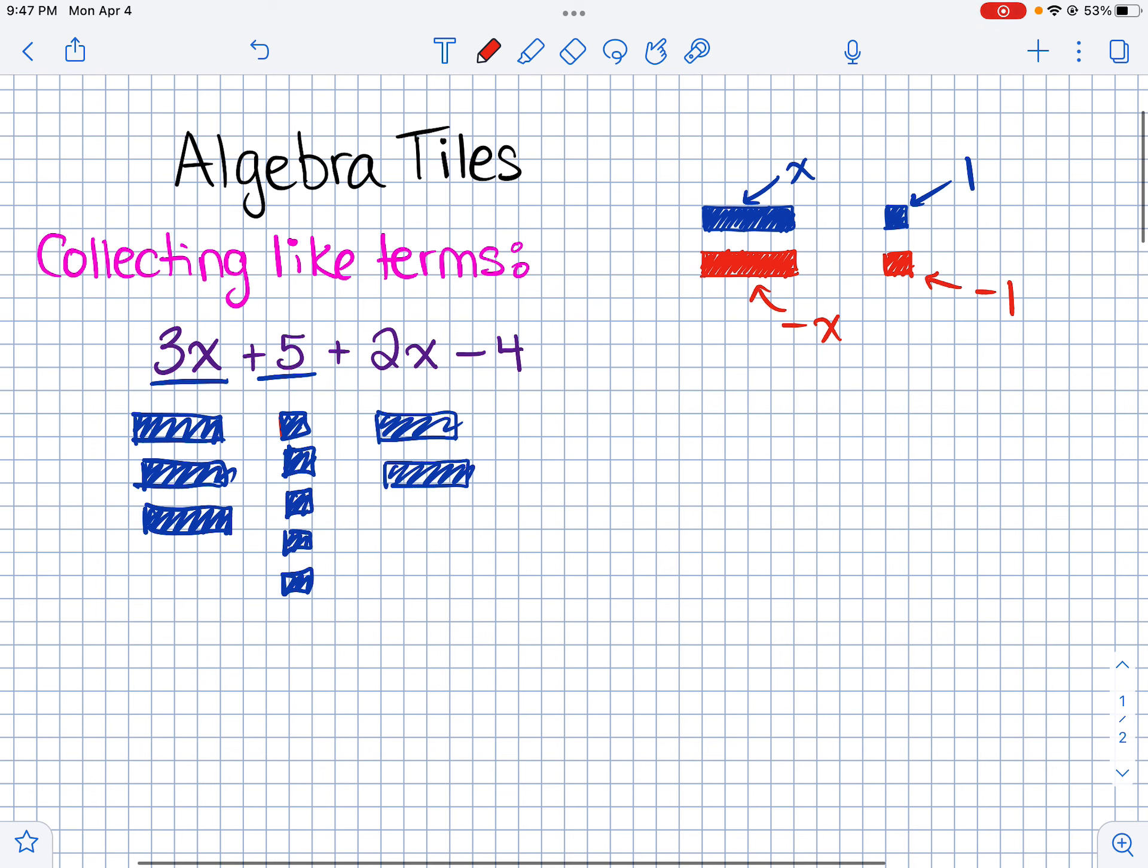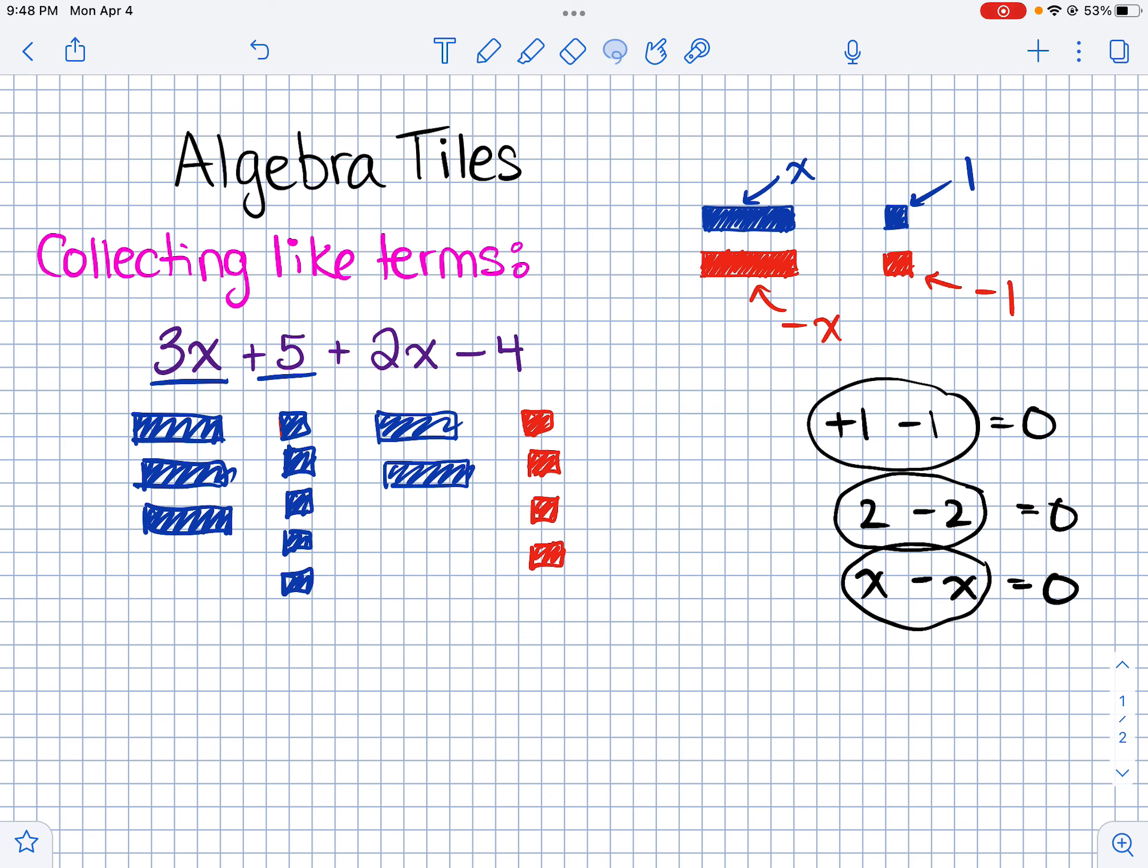And then the minus 4 would be 4 negative 1 tiles. So we know that like a positive 1 and a negative 1 would add up to 0. Just like a 2 and a minus 2 would add up to 0. Just like an X and a negative X would add up to 0. Sometimes we call these zero pairs because they make 0.